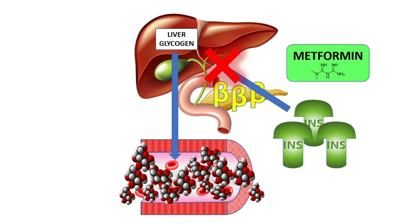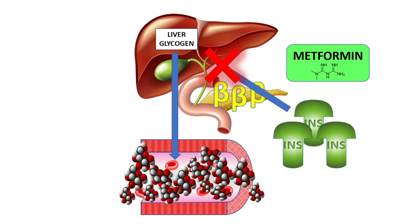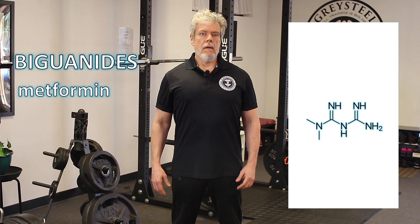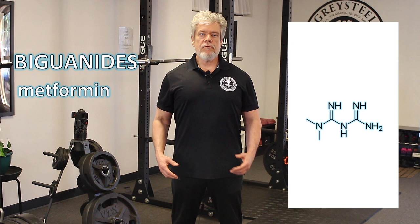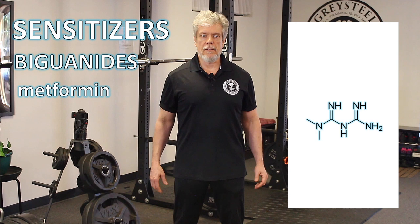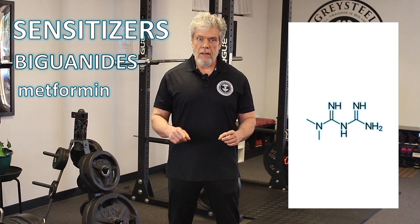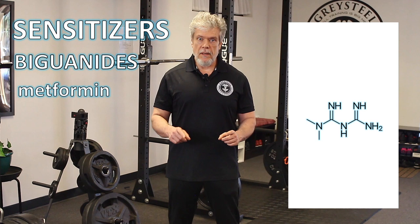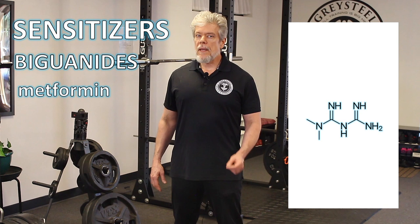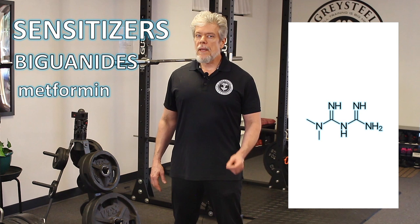Metformin improves insulin sensitivity and reduces hepatic glucose output. The improvement in insulin sensitivity is not completely understood but is probably through several mechanisms, including effects on mitochondrial energy metabolism and on glucose transporters. The net effect is to make you more sensitive to insulin. Metformin is therefore not just a biguanide but also a member of a larger class we can call sensitizers. It is taken orally, safe, effective, and well tolerated. It forms first-line therapy for pre-diabetics and diabetics. Side effects include gastrointestinal issues and the serious risk of lactic acidosis; it should not be used in serious liver or kidney disease. A big plus: it does not cause hypoglycemia.